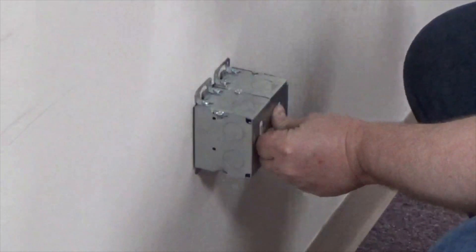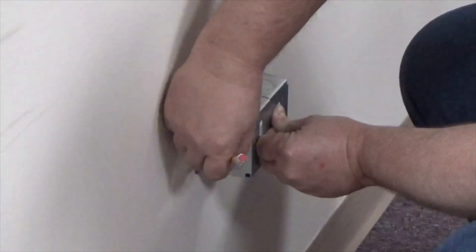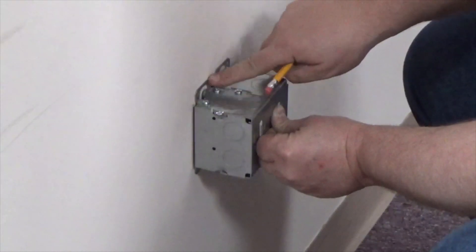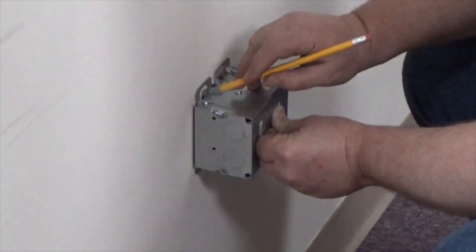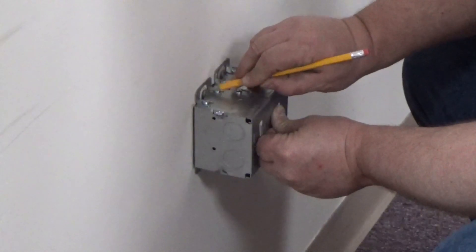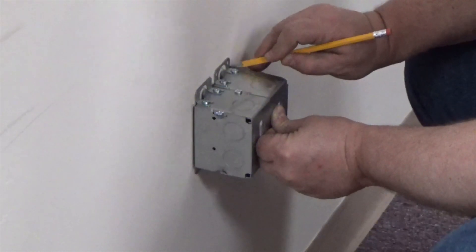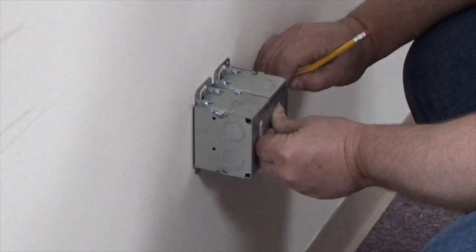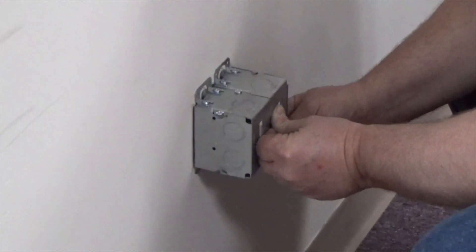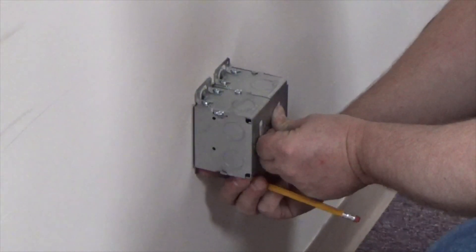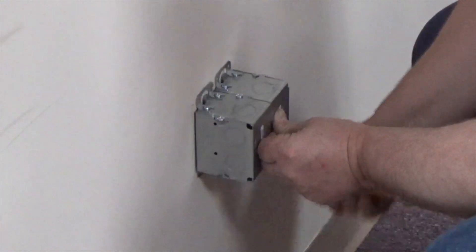Once I have it leveled, I'm going to hold some pressure and I'm going to take my pencil and what I'm going to do is I'm going to trace the outside of the box. Now, these metal wings here, you do not want to cut out because that's what's actually going to be holding on the sheetrock. You want to just cover where the box is all the way around. Then you're going to do the same thing underneath. Do the same thing here.